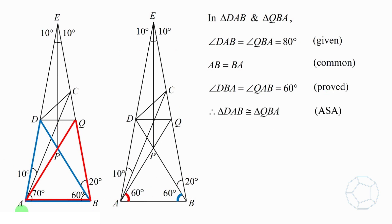Therefore, triangle DAB and triangle QBA are congruent. And the reason is ASA. We got one more pair of corresponding sides of congruent triangles. DB is equal to QA. Let them be X. We're getting closer to the final answer.